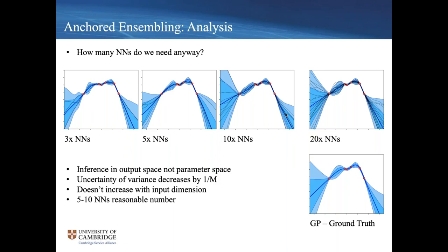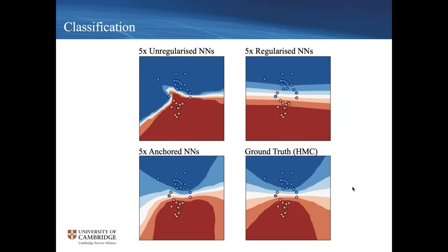One question I often get asked is how many neural networks you need in an ensemble. This demonstration shows that starting from just three networks gives a shaky distribution, but going to around 10 or 20 you get a pretty good approximation of the ground truth. We recommend 10 as a rule of thumb, and we argue in the paper that this number doesn't really increase with the number of inputs.